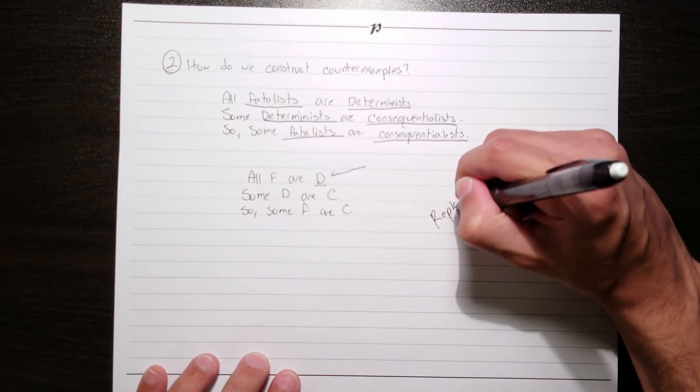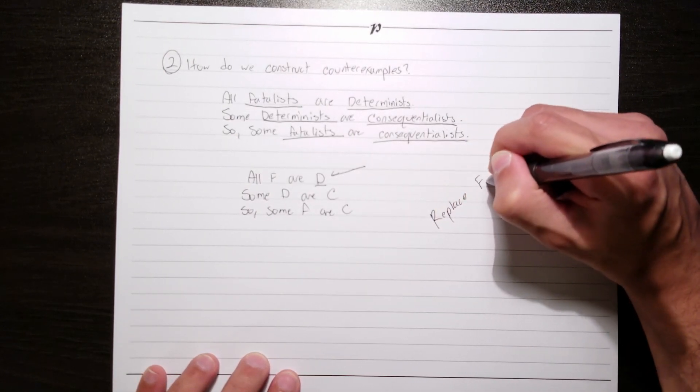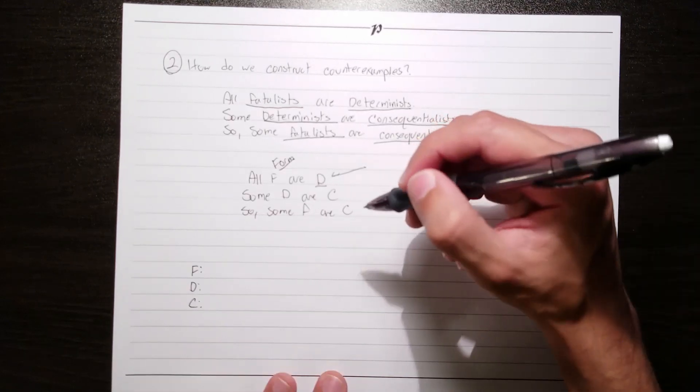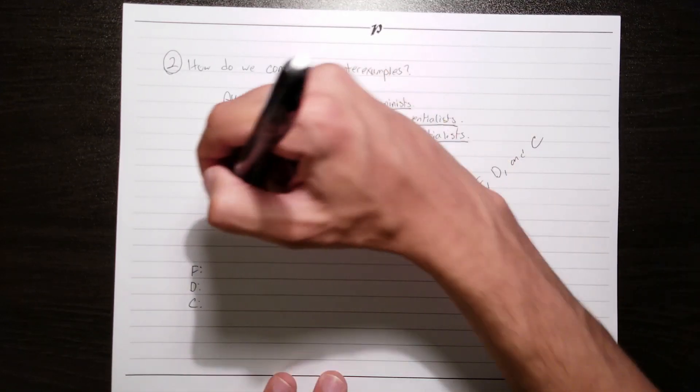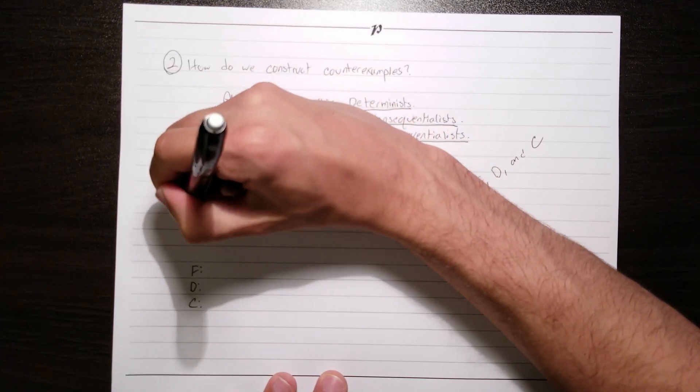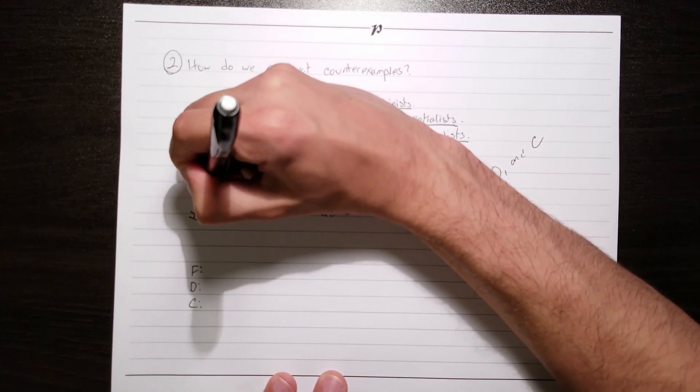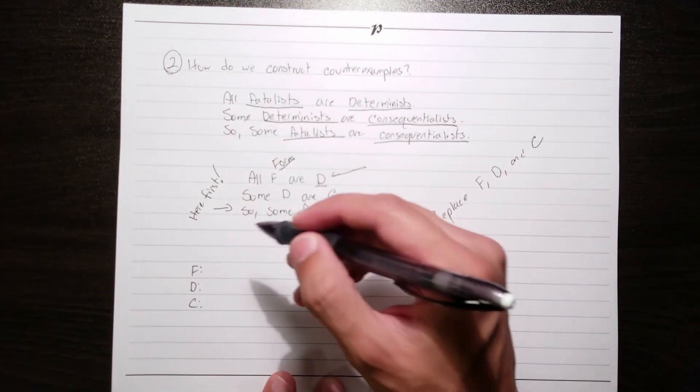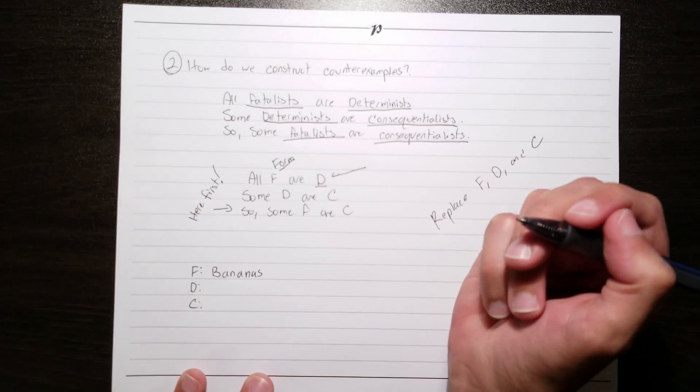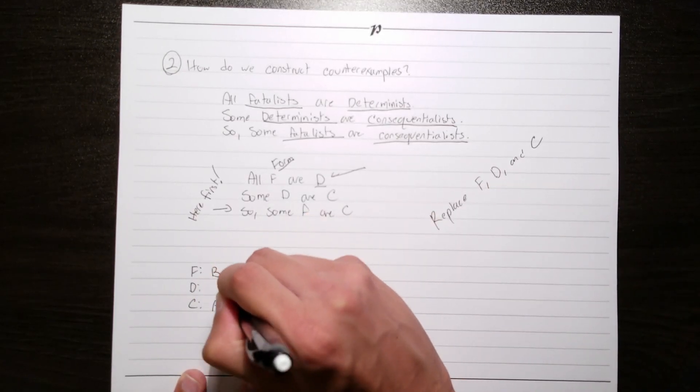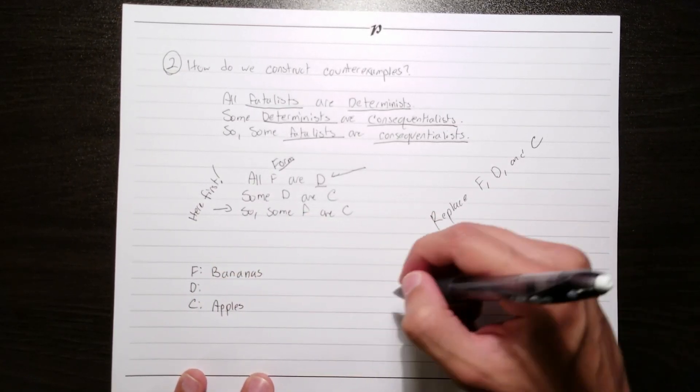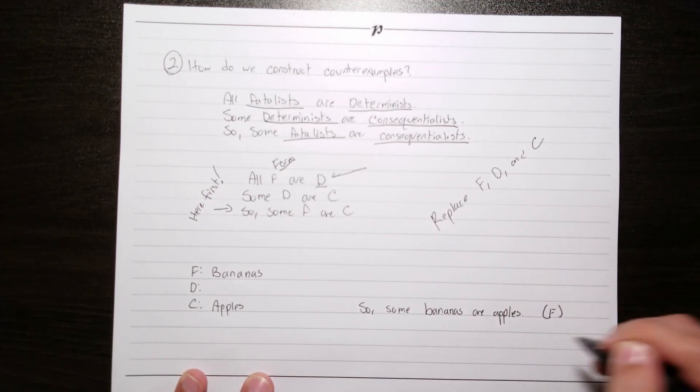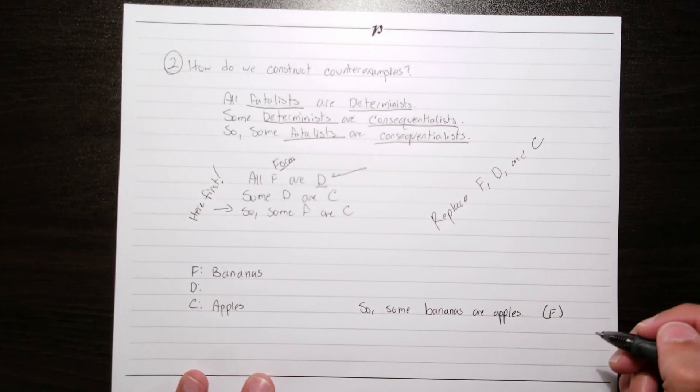Now we're going to replace F, D, and C with new content that'll make these premises true and this conclusion false. One last piece of advice before we begin. You always want to start off by making the conclusion false. It'll just make your life much easier. So let's go ahead and replace this content. I went ahead and used bananas for the letter F, and I used apples for the letter C. That makes the conclusion, so some bananas are apples. This is clearly false, and so we've succeeded in making the conclusion false.